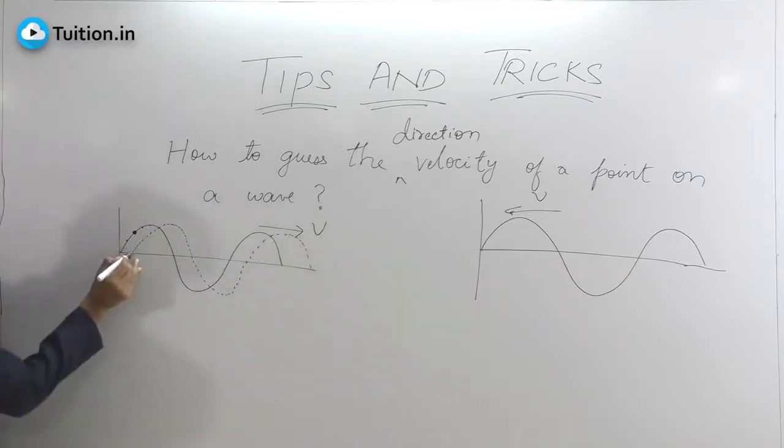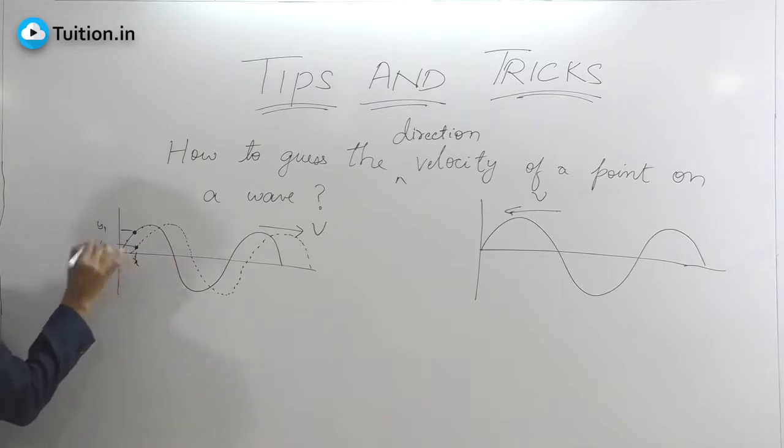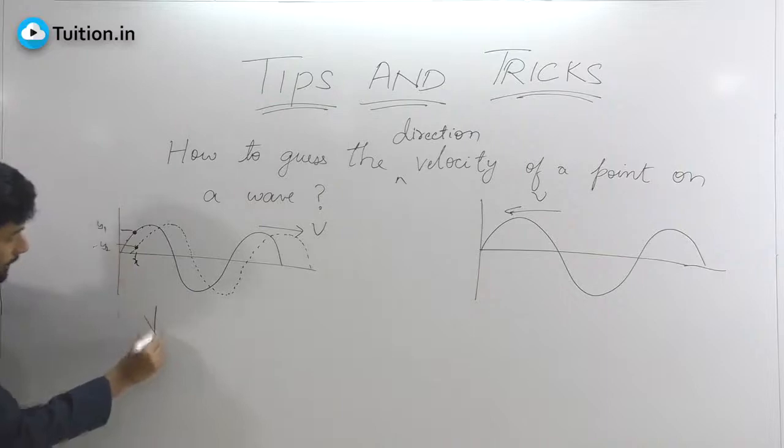This particular point will now be here, assuming the same x for both. The y initially was this much, y1, and your y2 is here. That means the point has come down. If it has come down, that means the velocity of the point was downwards. That is how you actually visualize it.